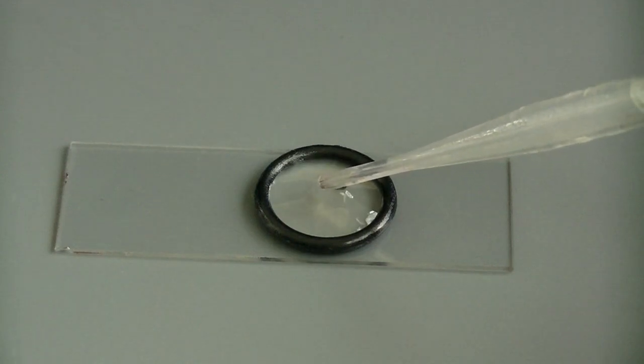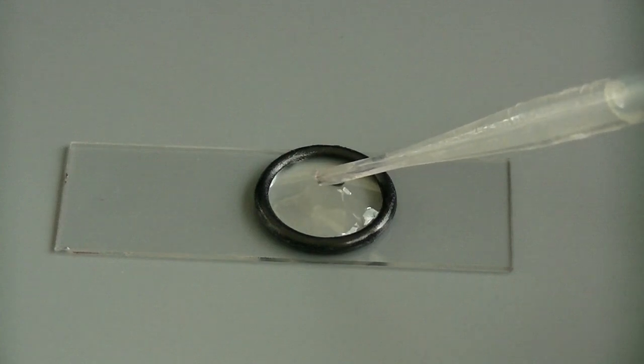You need to fill so that the liquid is just bulging above the O-ring held there by surface tension.